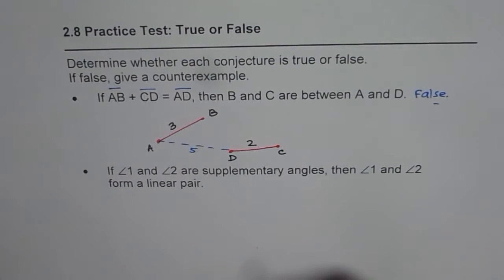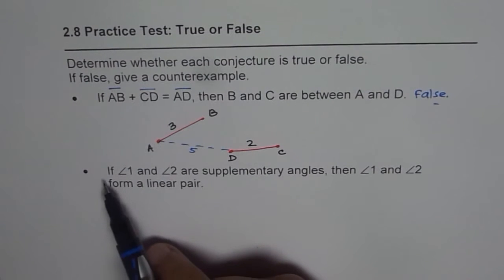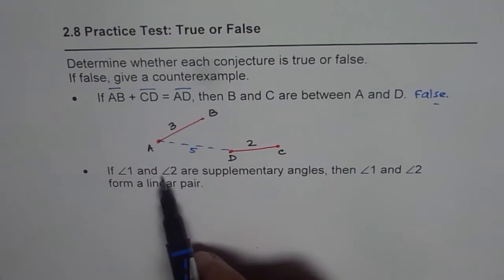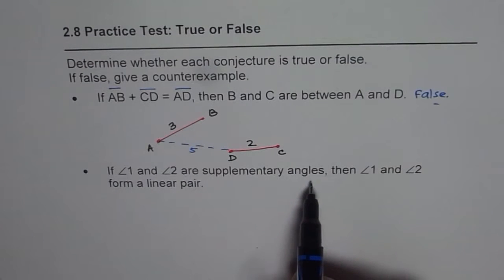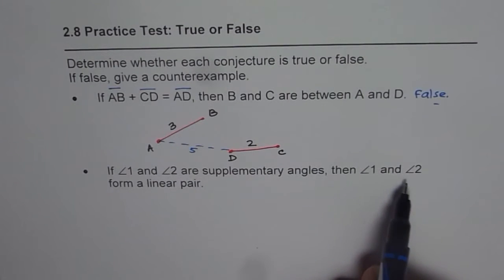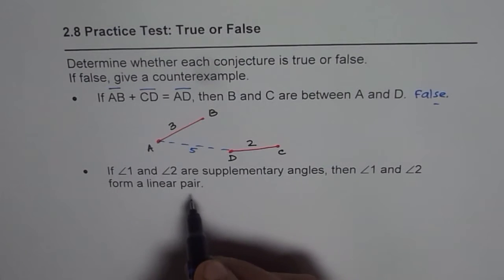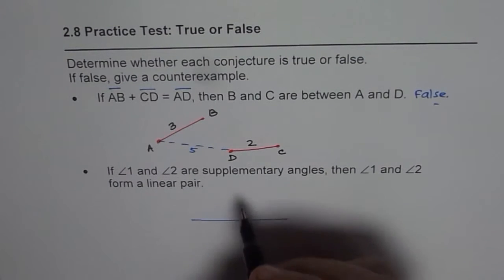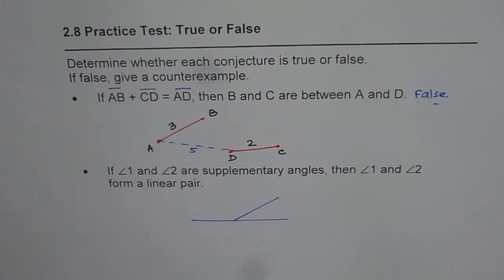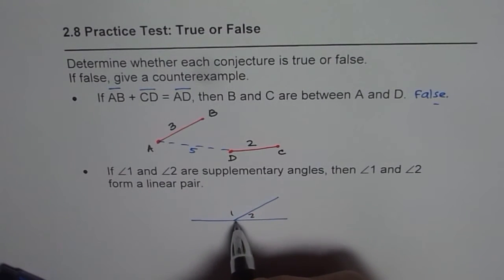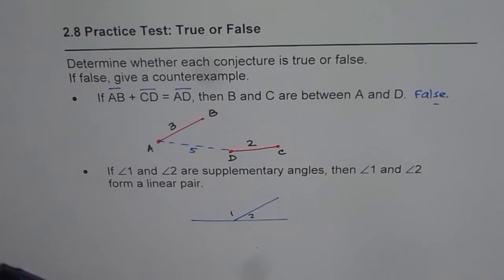How about the next statement? It says if angle one and angle two are supplementary angles, then angle one and two are linear pairs. Now in case of linear pairs, as we know, they should be joined together. So linear pairs have adjacent angles. That is a linear pair where angle one and angle two will be supplementary.